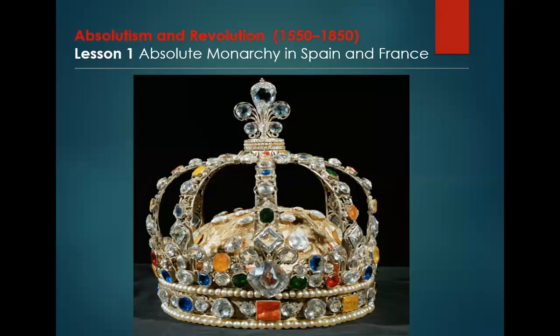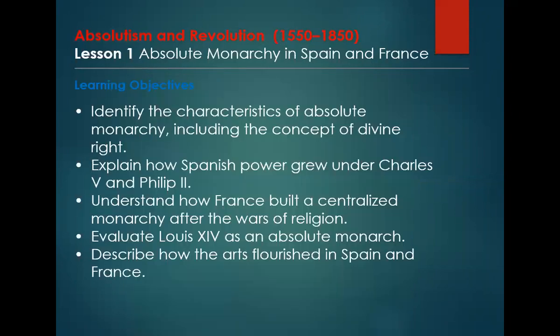I'll make sure to put them into the corresponding playlists and up on the Google Calendar where they are needed. This first part, 12.1, is about absolute monarchy in Spain and France. Here are the learning objectives: identify the characteristics of absolute monarchy including the concept of divine right; explain how Spanish power grew under Charles V and Philip II; understand how France built a centralized monarchy after the wars of religion; evaluate Louis XIV as an absolute monarch; and describe how the arts flourished in Spain and France.